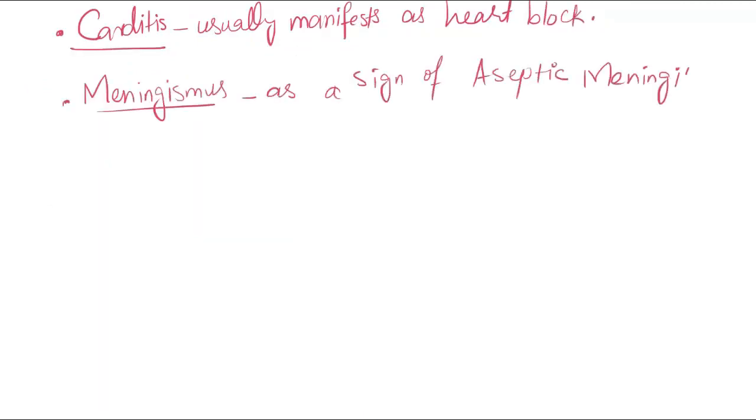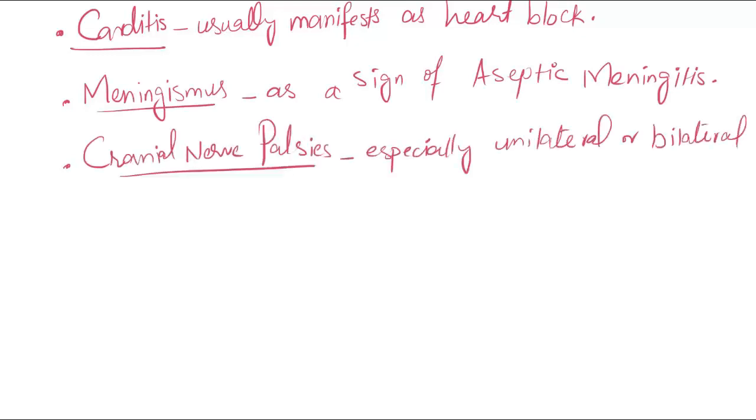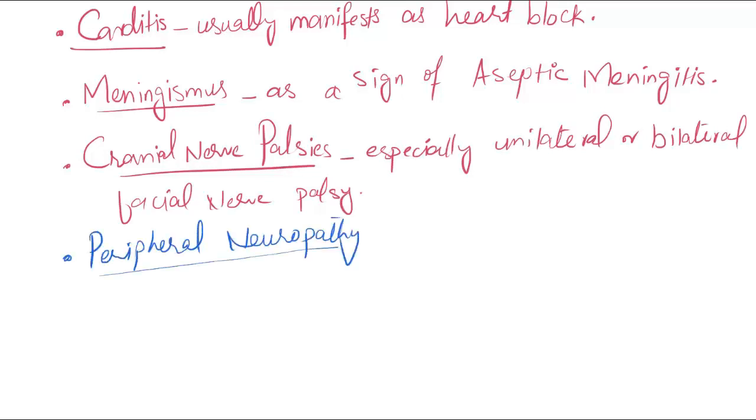Carditis usually manifests as heart block. Meningismus as a sign of aseptic meningitis may be present. Cranial nerve palsies may occur, especially unilateral or bilateral facial nerve palsy. Peripheral neuropathy and radiculopathy are often painful.